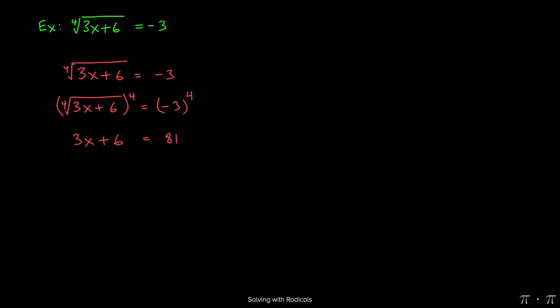When we do that, the left-hand side just gives us 3x plus 6 by itself, whereas the right-hand side, negative 3 to the fourth, gives us 81.